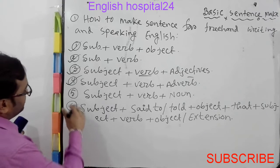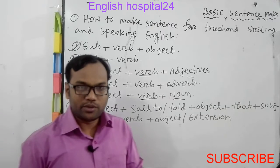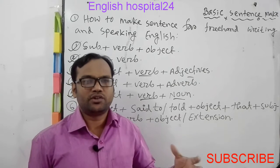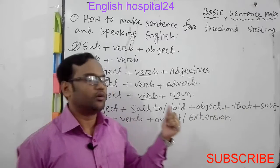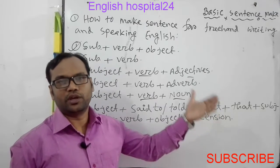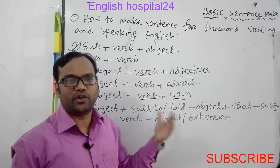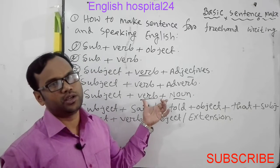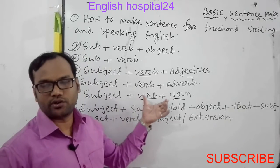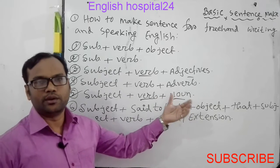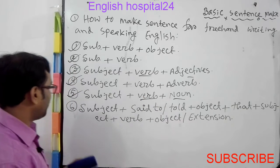Number five is Subject-Verb-Noun. When we want someone to give us any material or noun or anything, we can use this structure. Examples: give me a book, he gave me a book, he is a doctor, he is a teacher, they are our friends, he is my father, he is my friend.